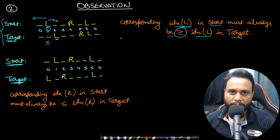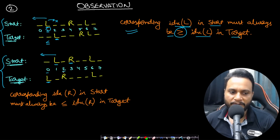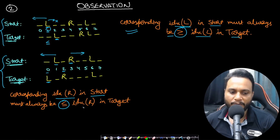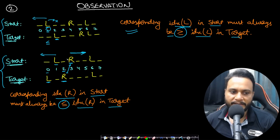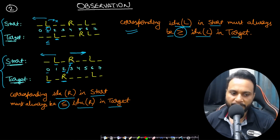Looking at the second example: the L at first index matches with L at index 0 because we can always move to the left — that condition holds. But for the R present at index 3 which needs to match with R at index 2 in target: since R can only move to the right, the condition changes. The corresponding R in start must always be at an index less than or equal to the index of R in the target. If the target's R is at a left-hand side index, this match is never going to happen — so we return false.